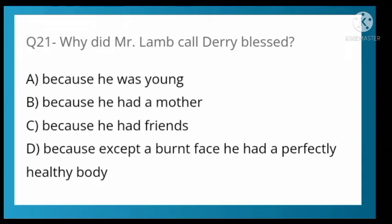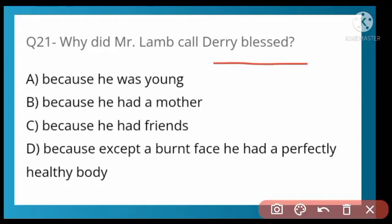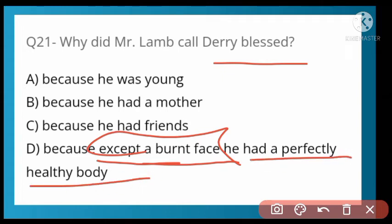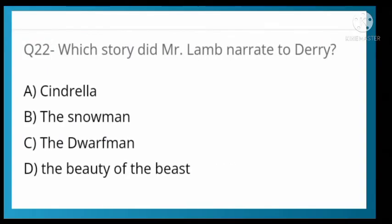Why did Mr. Lamb call Derry 'Willized'? Options: because he was young, because he had a mother, because he had friends, or because except for his acid-burnt face his body was perfectly healthy. Option D is correct — except for one side of his burnt face, Derry's entire body was perfectly healthy. He could walk and see, so Mr. Lamb called him willized.